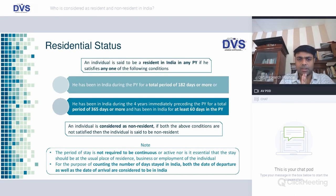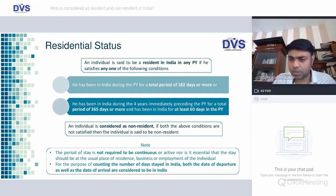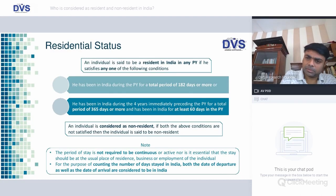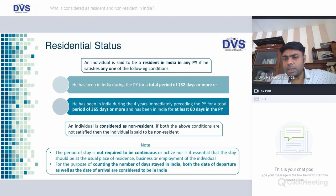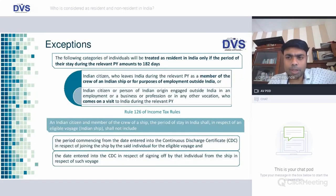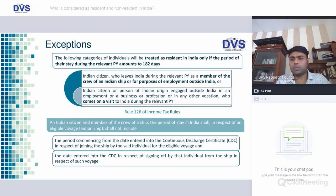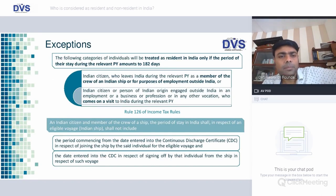Once a person is considered a non-resident, the question of ordinary or not-ordinary resident does not arise. The period of stay for determining residential status need not be continuous — it can be in multiple parts. Both the date of entering India and the date of leaving India shall be considered for purposes of determining period of stay.